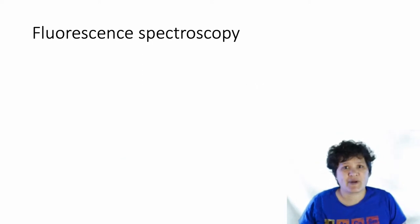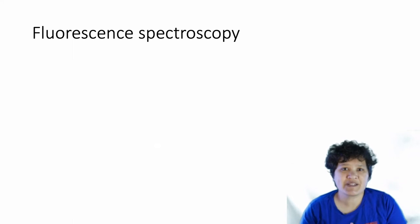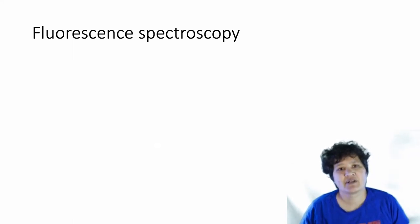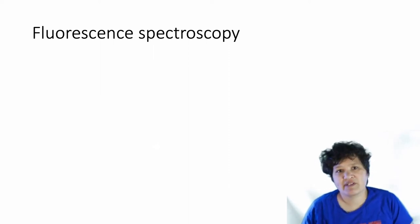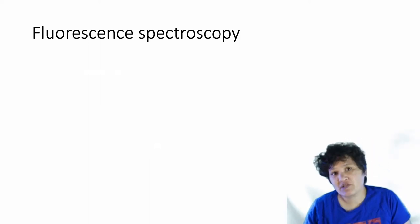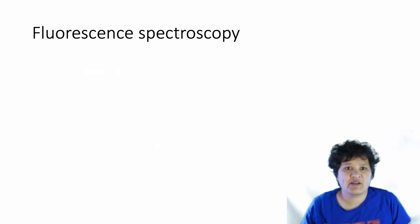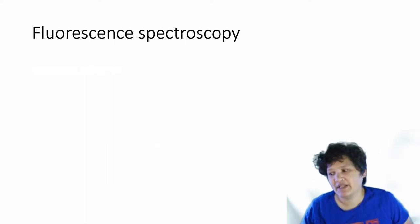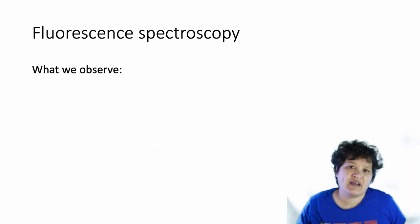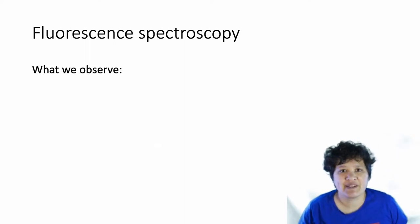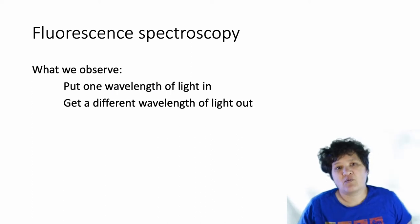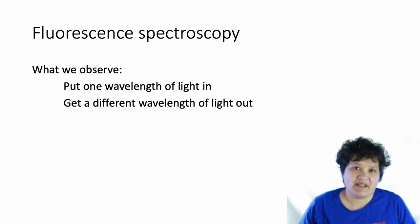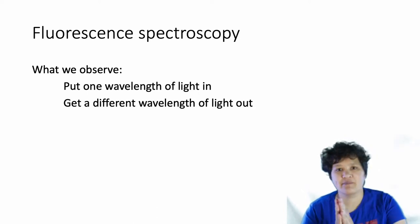Now we're going to talk about fluorescent spectroscopy. Once again, we're talking about light coming in and hitting electrons. With UV-Vis, we were mostly talking about either absorption or emission spectroscopy — we'd look at either what was absorbed or what was emitted. With fluorescence, we're doing both. Basically, we're putting one wavelength of light in, which is what's being absorbed, but also emitting a different wavelength of light — that's what's being emitted.